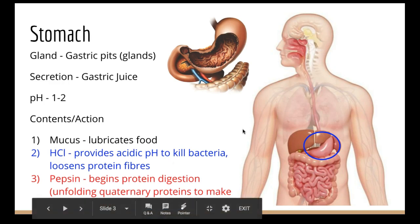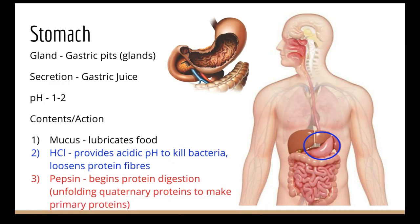Pepsin is the first protein enzyme, found in our stomach. It takes a quaternary protein — all folded up in a ball — and breaks the bonds to cause it to become a primary protein. This is essentially the same as denaturing a protein, unfolding it from quaternary to primary structure, making it easier to digest and pull apart. We want it flat so it can pass into our intestines and be broken down by other enzymes.